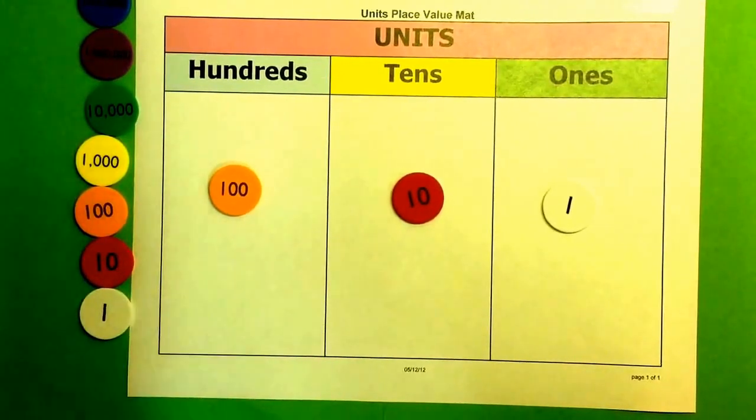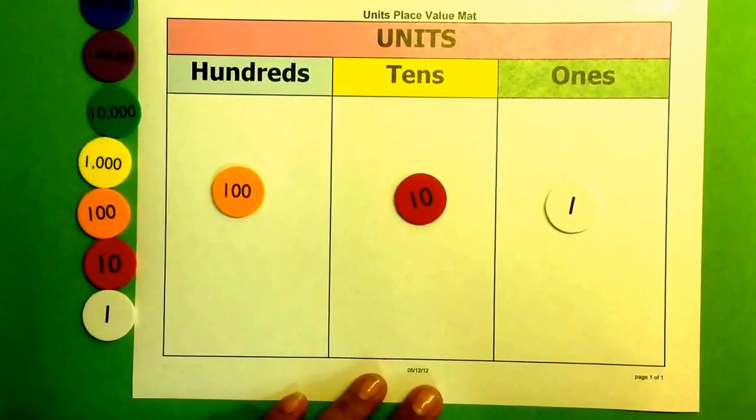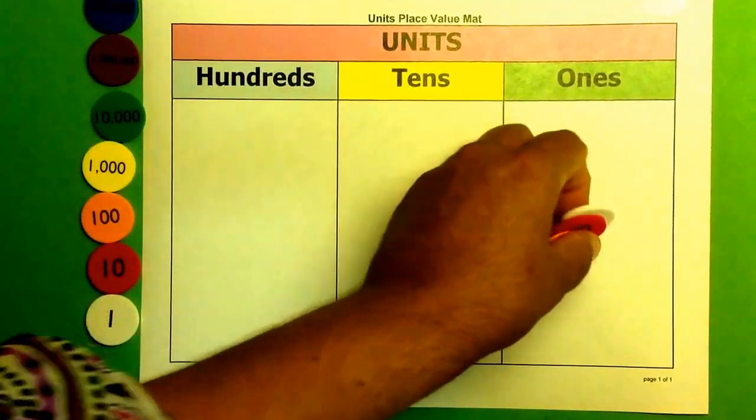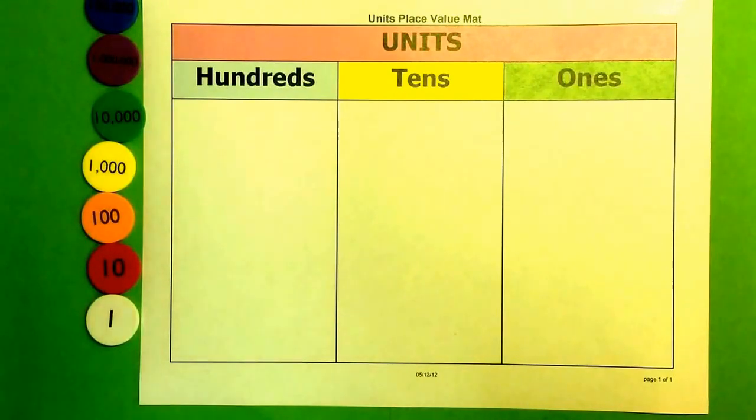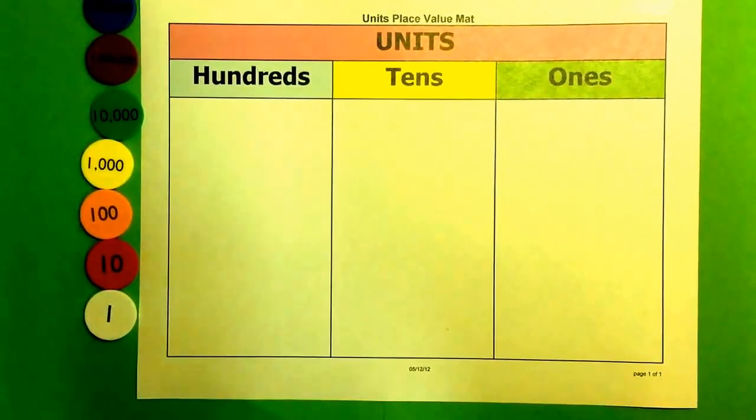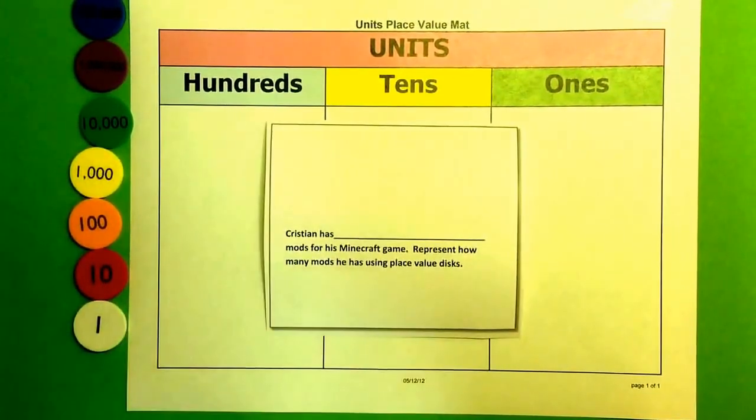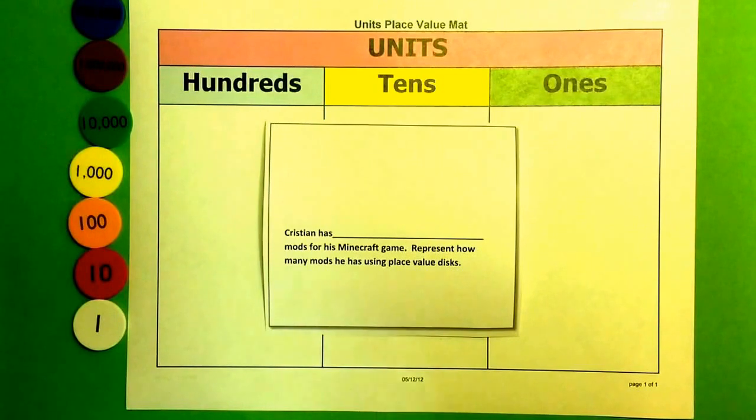I'm going to show you a couple of activities that you can do with your students using place value disks. The first one is simply composing or decomposing numbers. Here we have a scenario. You never want to use naked numbers. You want students to have some sort of context.